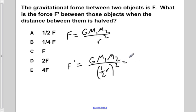If we do so, we would have G m1 m2 over one fourth r squared.